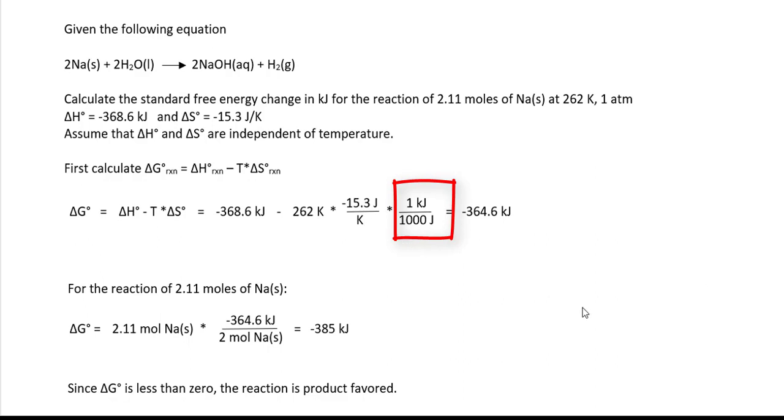Specifically, for 2.11 moles of sodium, we need to calculate the delta G. We would anticipate the value of delta G for the 2.11 moles of sodium to be slightly more negative than negative 364.6, because the negative 364.6 is for 2 moles of sodium.